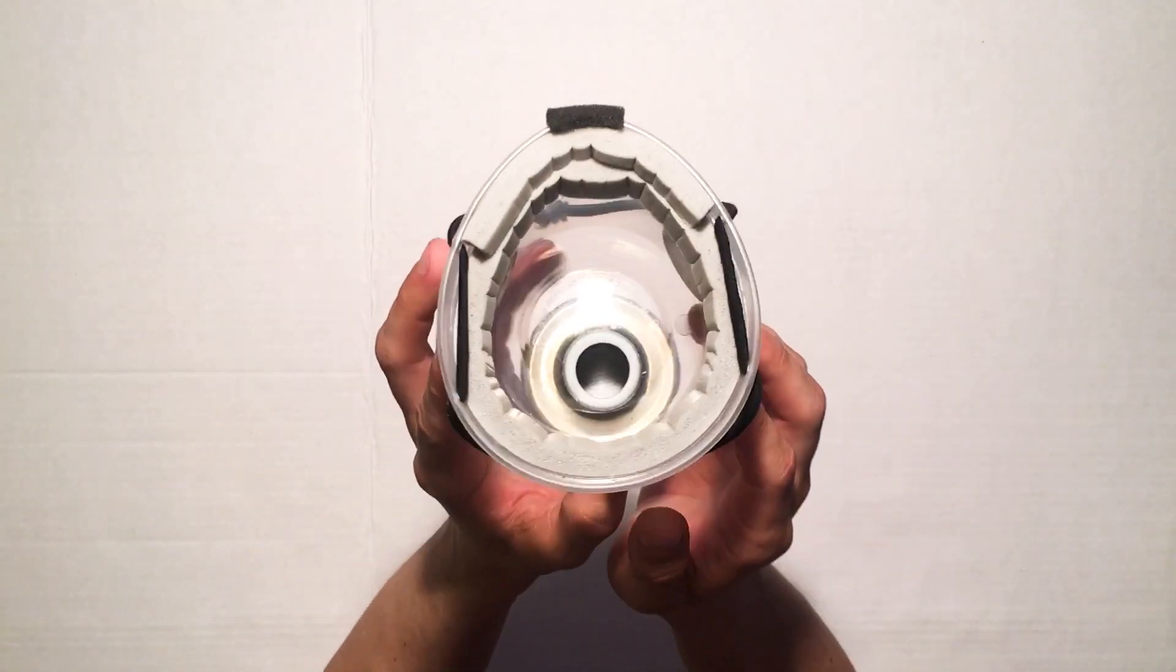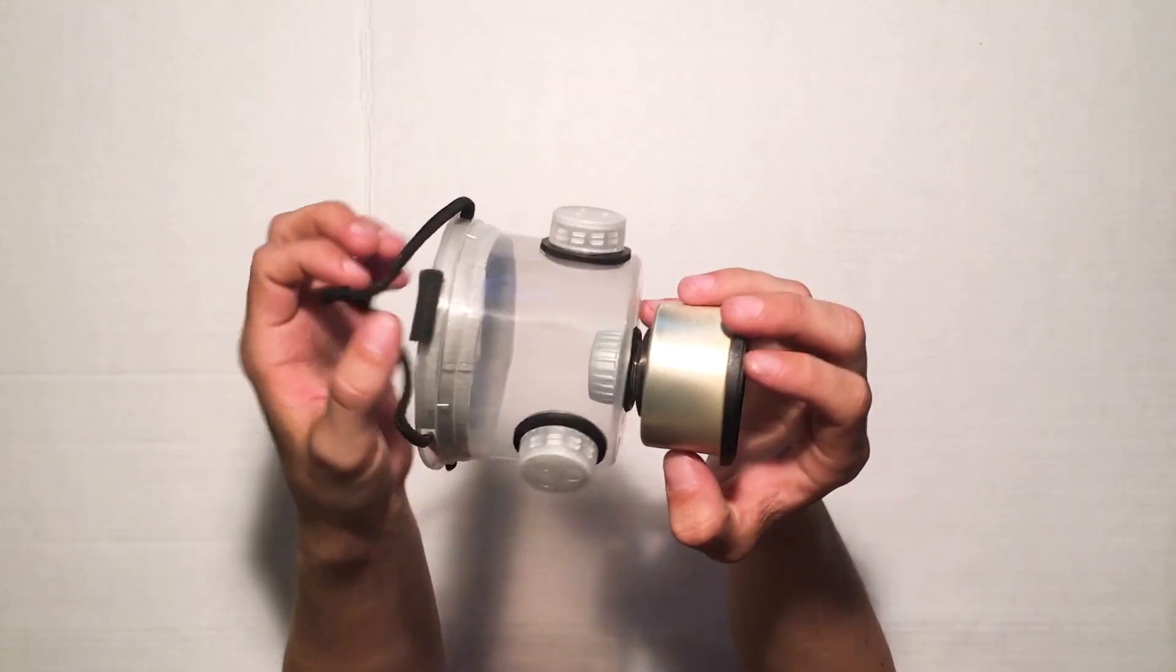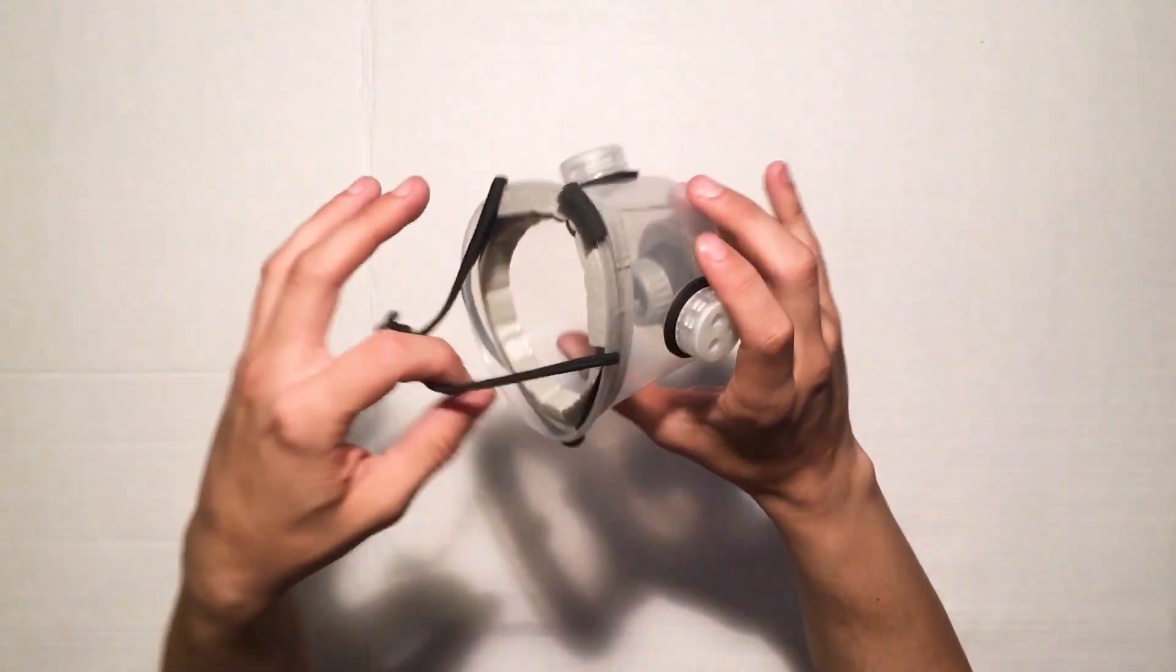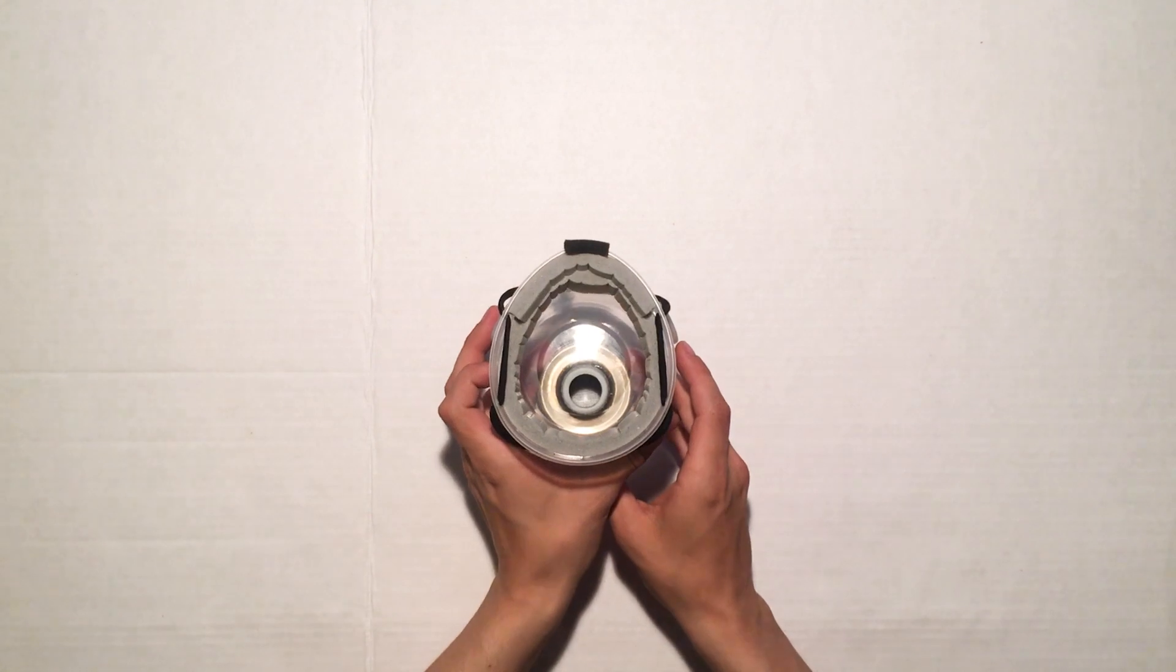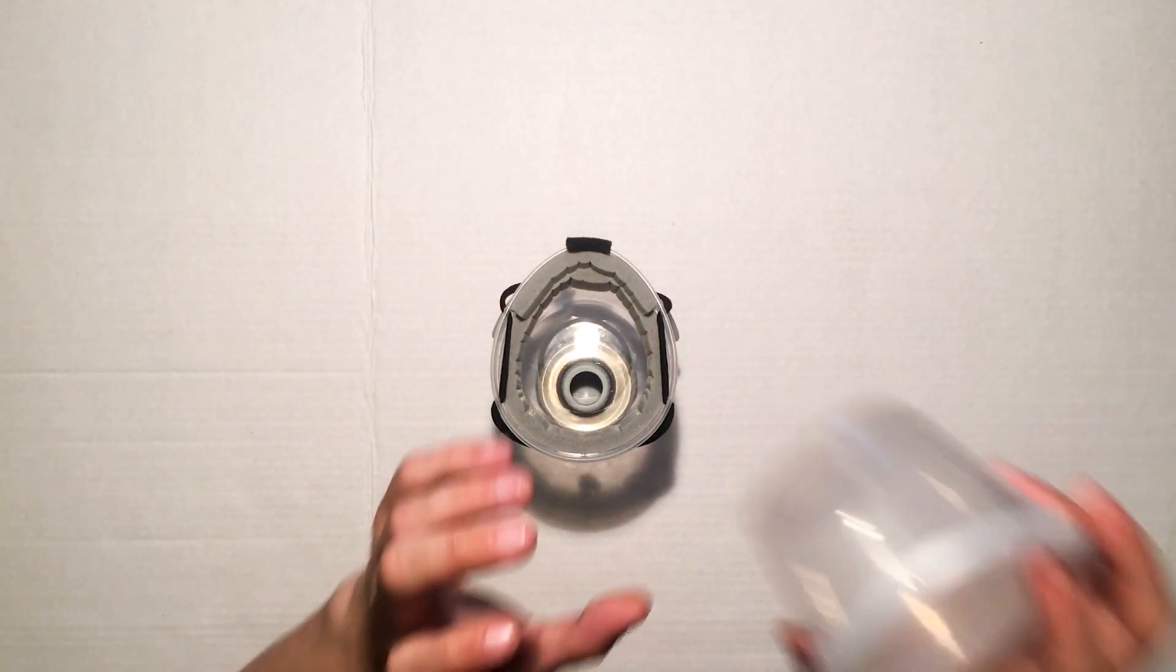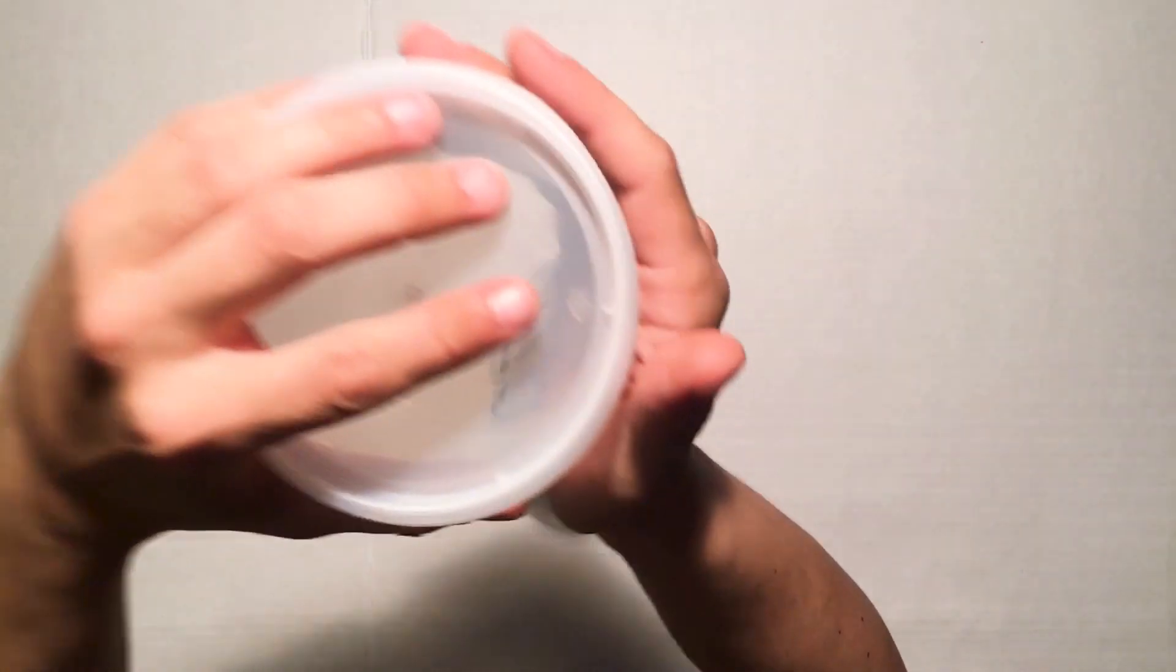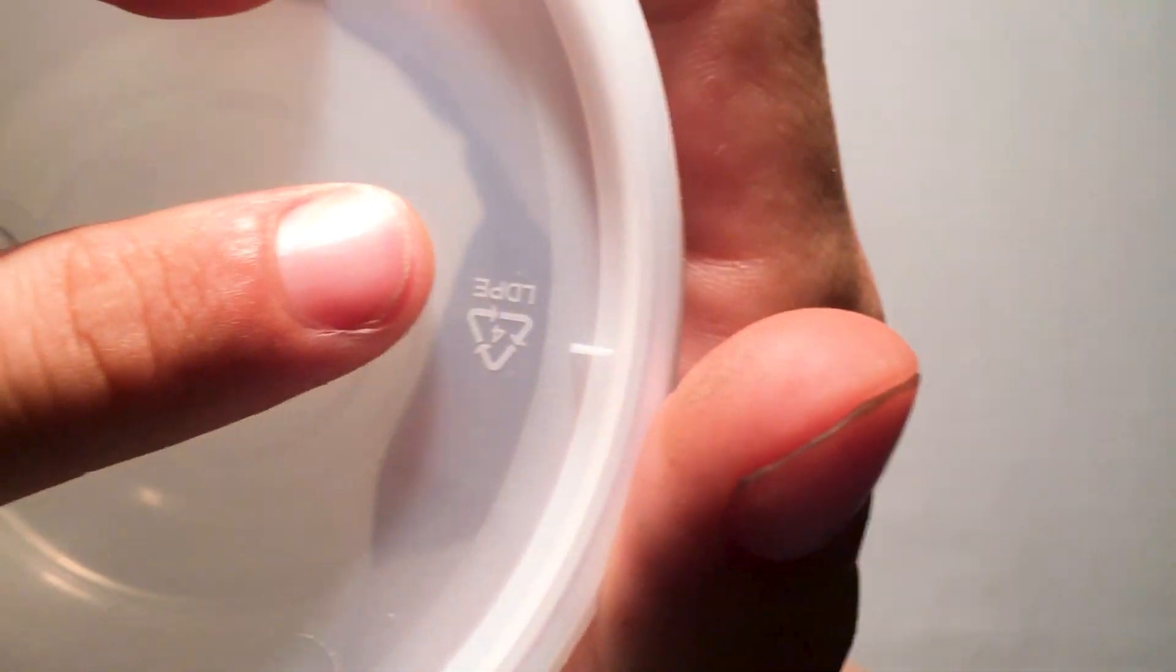Examining the build, you'll see this is a fairly simple construction. The face piece is made from a 16-ounce deli container. These are made from number 4 LDPE plastic.